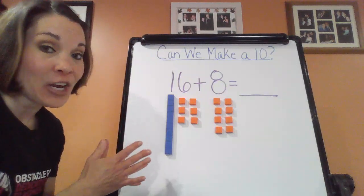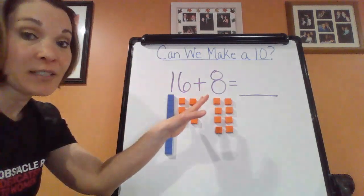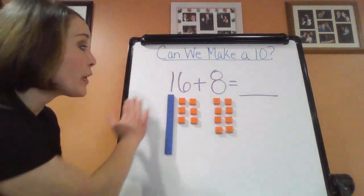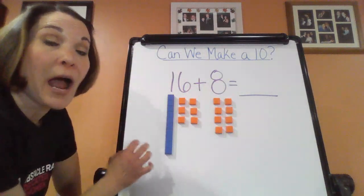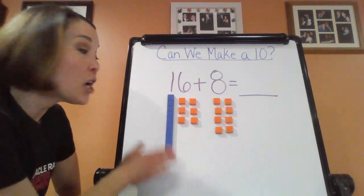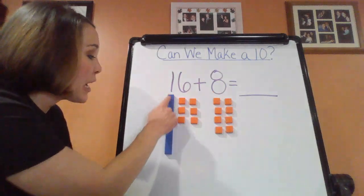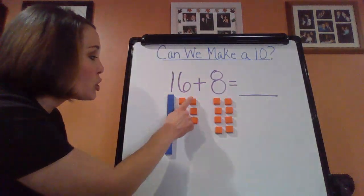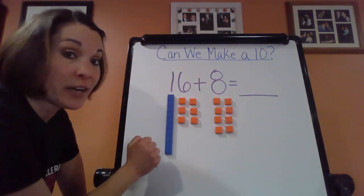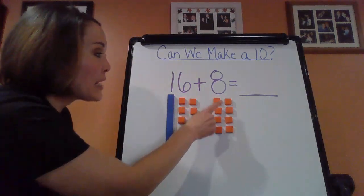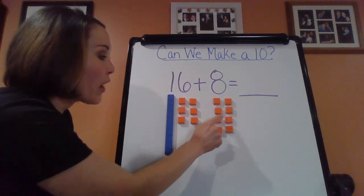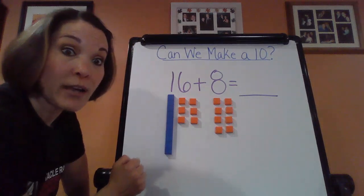So as you can see here, my first equation is 16 plus 8, and to save time, I already made the models, or I placed the place value blocks so you can see it more visually. So for 16, as you can see, I have one 10, and one, two, three, four, five, six ones, and for my additional 8, I have one, two, three, four, five, six, seven, eight more ones.